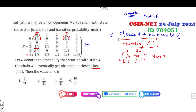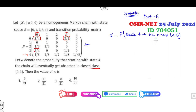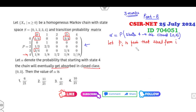Now let me show you how to solve this in a very simple manner. Let P_i be the probability that starting from state i, the chain eventually gets absorbed into the closed state {0, 3}. Based on the transition probability matrix, I can now write these probabilities.